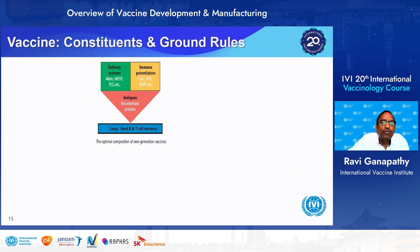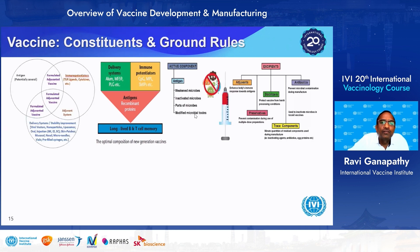Vaccines are generally composed of antigens and may have immunopotentiators, delivery systems, and adjuvants like alum. The active component is the antigen, which can be of any type. Excipients include adjuvants, stabilizers which protect the vaccine from harsh processing conditions, antibiotics which may also be a trace component from residuals used in manufacture, and preservatives which prevent contamination in multi-dose presentations.